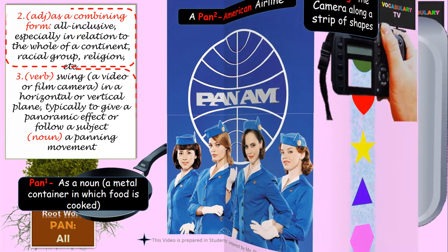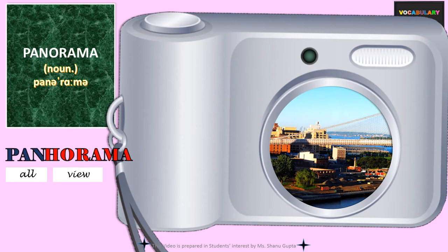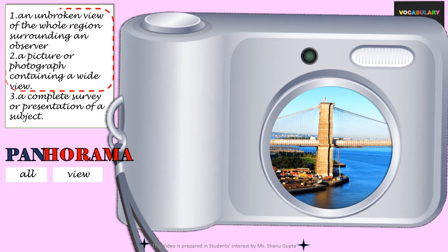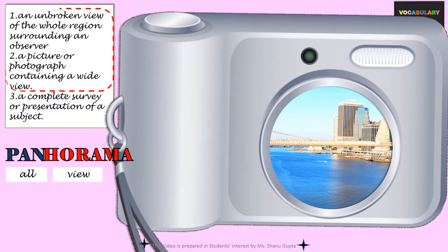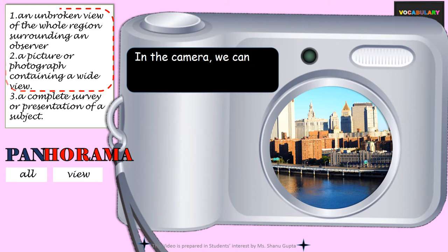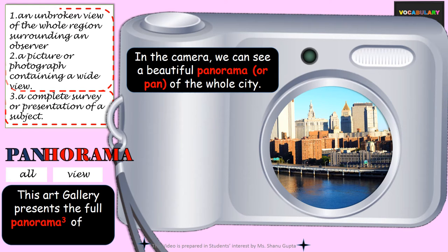The next word is Panorama, made up of pan meaning 'all' and orama meaning 'view.' The word literally means 'all view' or the complete view, and refers to a picture or photograph which is very wide and hence gives a complete view. There is a panoramic mode in the cameras of most smartphones. If you have an unbroken view of the whole region surrounding you, it would be called a panorama. In the camera, we can see a beautiful panorama of the whole city being unrolled part by part. The word can also refer to a complete survey or presentation of a subject — for example: This art gallery presents a full panorama of 19th-century art.